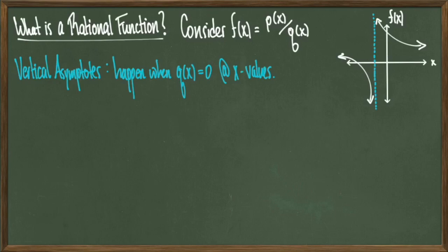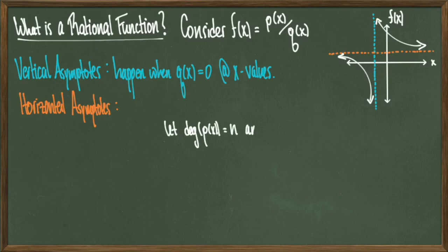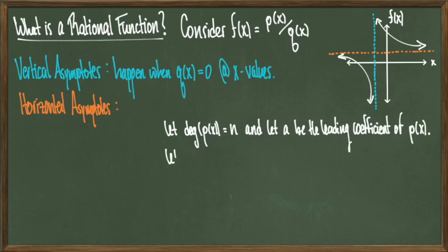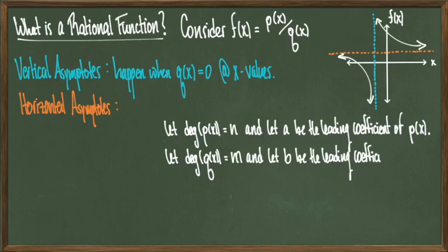The next kind of asymptote is called a horizontal asymptote, and this is one that is horizontal or parallel with the x-axis. Finding these is a little bit more tricky because we need some more machinery. So, considering our polynomials p of x and q of x, let n be the degree of p of x and let a be the leading coefficient of p of x, while also letting m be the degree of q of x and b be the leading coefficient of q of x. If these definitions don't make sense, I have a video on polynomial functions you're welcome to go watch.